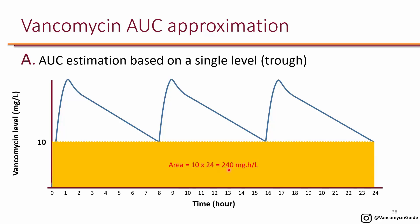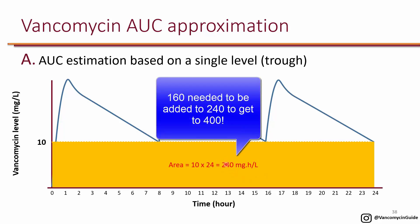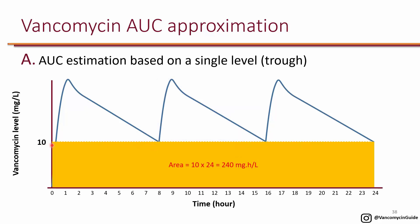We know the AUC is at least 240, and remember that we want the AUC-to-MIC ratio to be at least 400. So if the MIC happens to be 1, we need an AUC of 400. The highlighted area is at least 240, so we're hoping all the area at the top adds at least 160 more to reach 400.